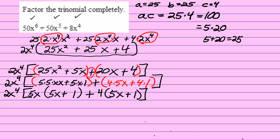Now notice that for the expression in the parentheses, 5x plus 1 occurs on both sides of the plus sign. It is the common factor. So we'll have 2x to the fourth times 5x plus 1 times 5x plus 4.